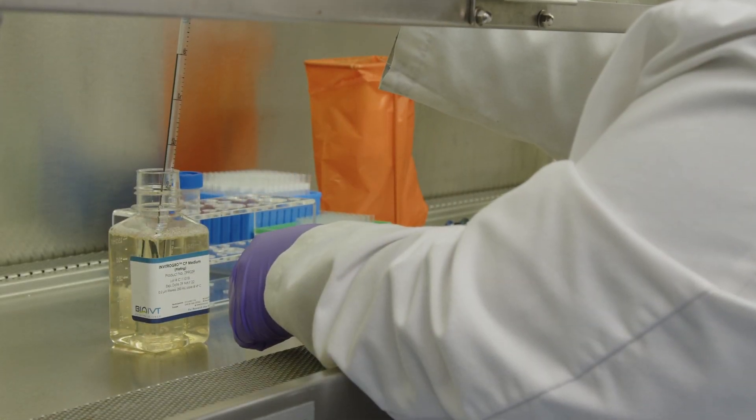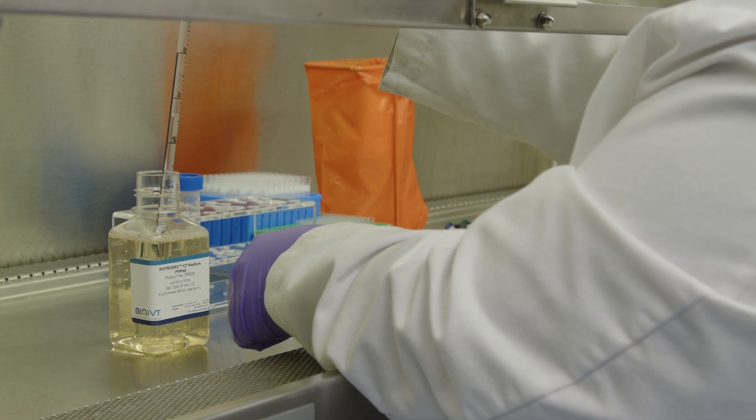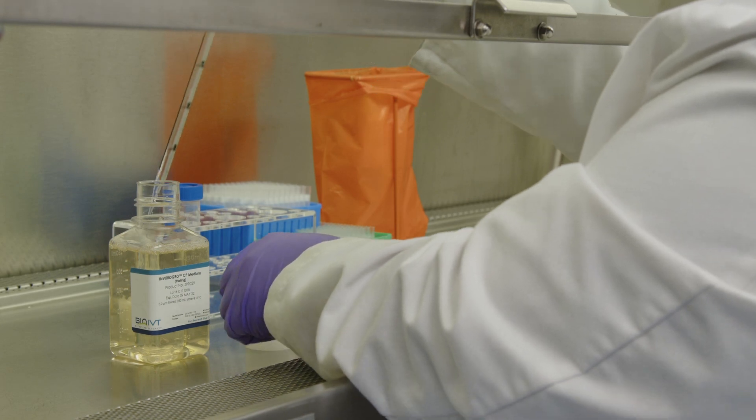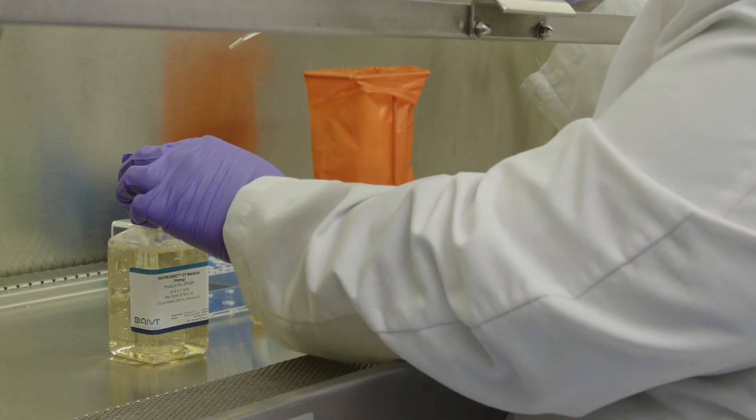Using a serological pipette, take 48 milliliters of the In Vitro Grow HT Medium and add it to a sterile 50 milliliter conical tube and place the tube in the water bath to maintain its temperature.